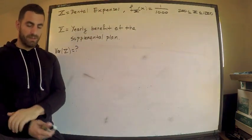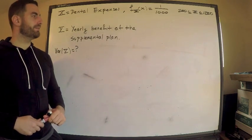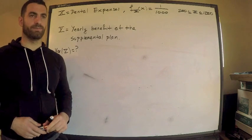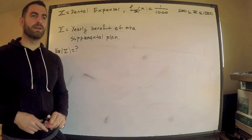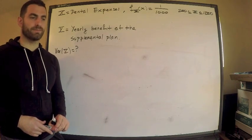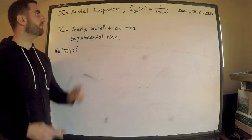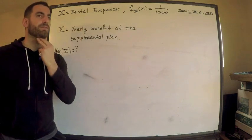And this is where you really want to be careful of the wording here. So, y is the yearly benefit of the supplemental plan. So take a look at the question again. There's sort of a primary plan that pays expenses for the first up to 400, up to 400. So that covers the dental expenses up to 400.